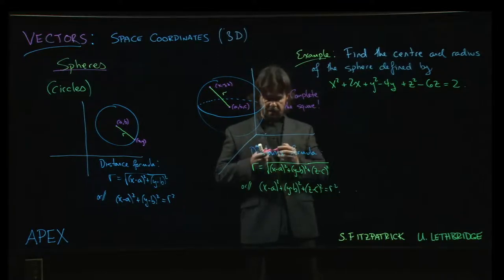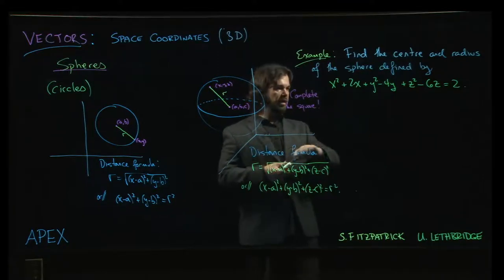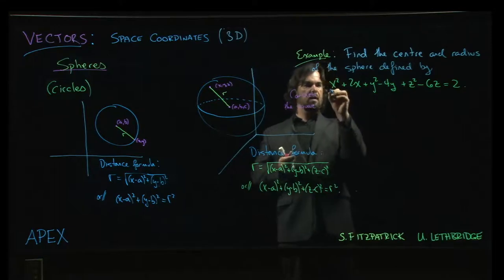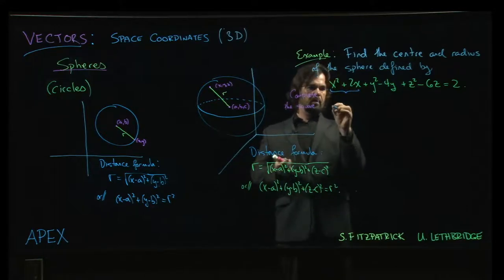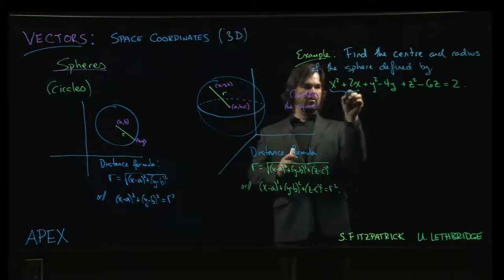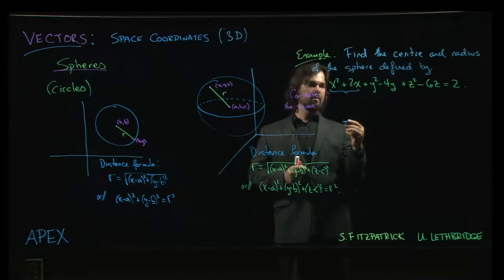And we do this one variable at a time. So we look at the x squared plus 2x and we say, okay, well when you're completing the square you take half of the linear term and that's going to give you the constant coefficient once you square it.